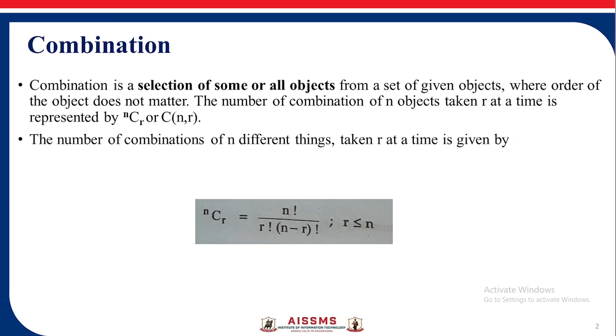The combination is selection of some or all objects from a set of given objects where order of the object does not matter. The number of combination of n objects taken r at a time is represented by nCr or C(n,r).